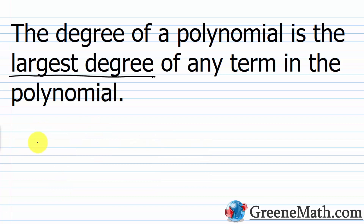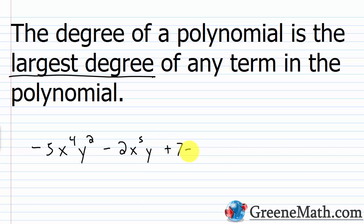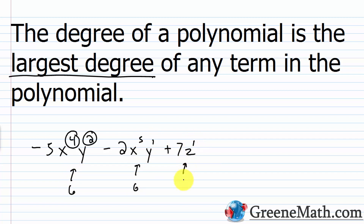Let's try another one: negative 5x to the fourth power y squared minus 2x to the fifth power y, plus 7z. What's the degree? For the first term: 4 plus 2 equals 6. For the second: 5 plus 1 equals 6. For the third: just 1. So you have a tie for first place with degree 6, but that doesn't change the answer — the degree of the polynomial is still 6.